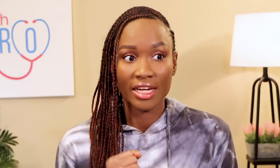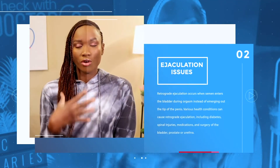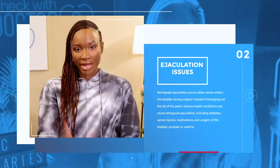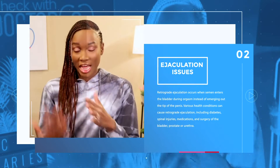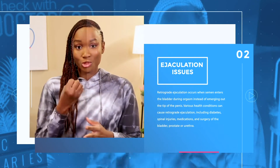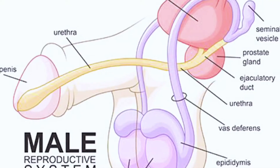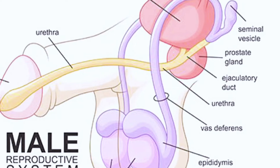Another thing that can prevent you from getting your partner pregnant as a man is something we call ejaculation issues. For example, when you have an orgasm and ejaculate, the sperm is supposed to be released outside of your body through your urethra — that's the passage the sperm is supposed to pass through.